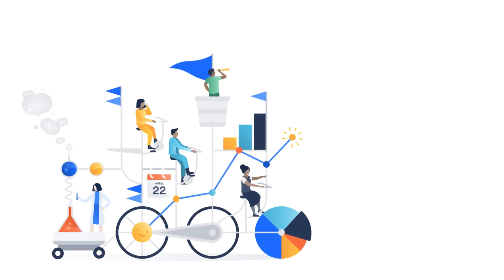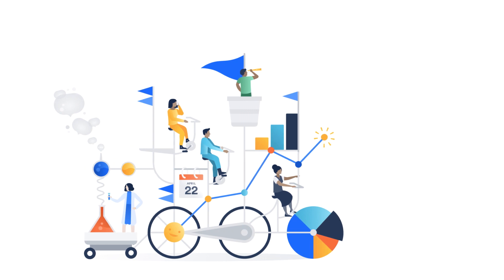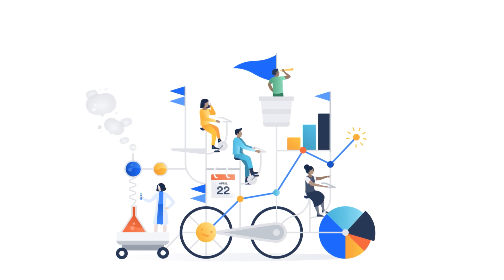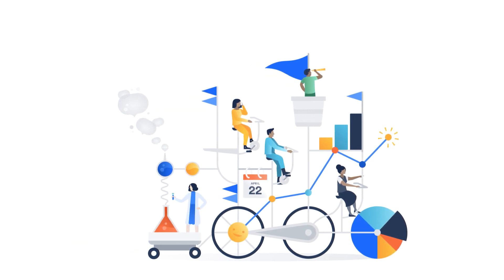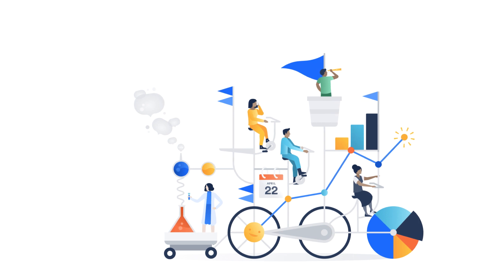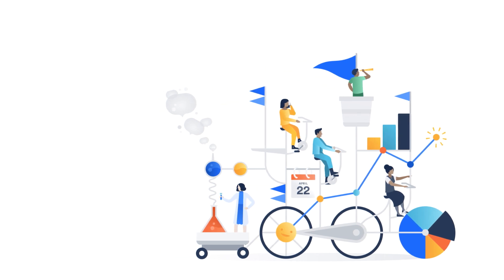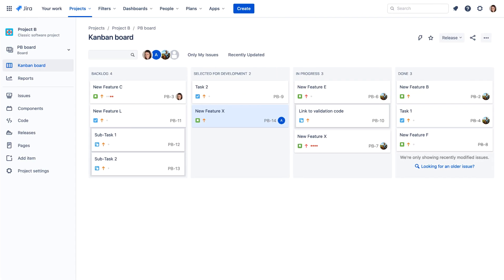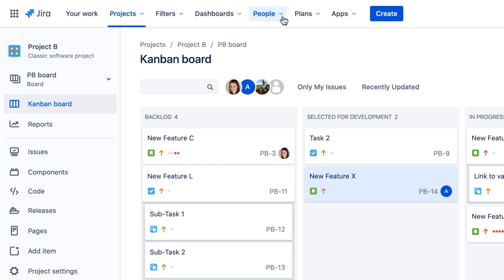Let's take a quick look at Teams in Jira Cloud. Jira Cloud enables you to define teams. A team is a collection of users that represent a real-world team working on one or more related projects. Teams are managed from Jira Cloud's People menu.